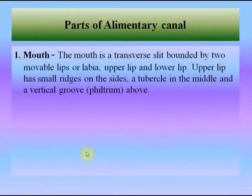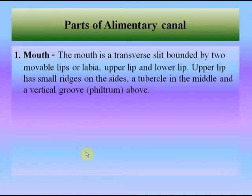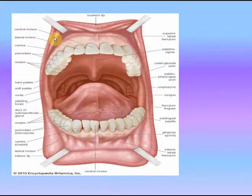Now, the parts of the alimentary canal. The alimentary canal is divided into several parts. The first is the mouth. Taking food into the mouth is called ingestion. We use lips, tongue, and teeth for taking food into the mouth, because the mouth plays an important role in sucking, facial expression, eating, drinking, and breathing.